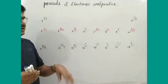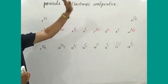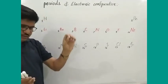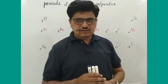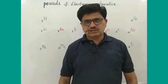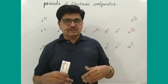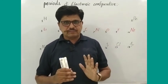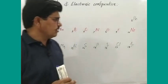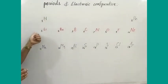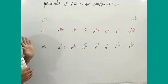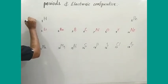In the last period, we studied about groups and electronic configuration. Now we'll discuss about periods and electronic configuration. We'll consider which are the first group elements, their electronic configuration, similarities, and differences between first group elements, then the second group and second, third period elements.